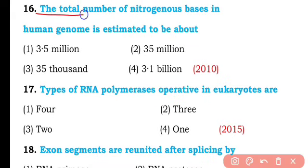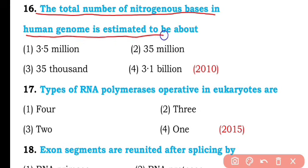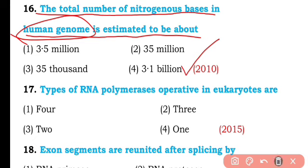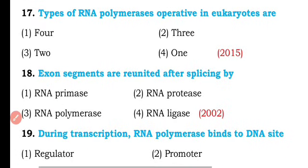Question number sixteen. The total number of nitrogenous bases in the human genome is estimated to be about: 3.5 million, 35 million, 35,000, or 3.1 billion? So the correct answer is option four — a total of 3.1 billion nitrogenous bases are present in the human genome.